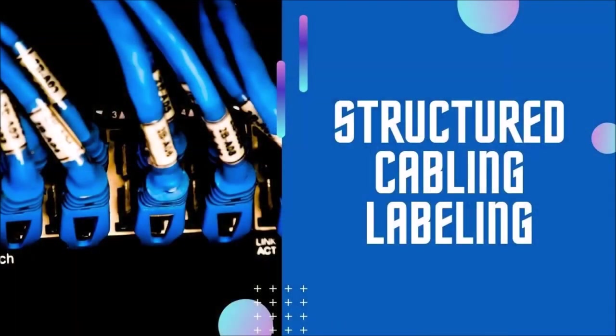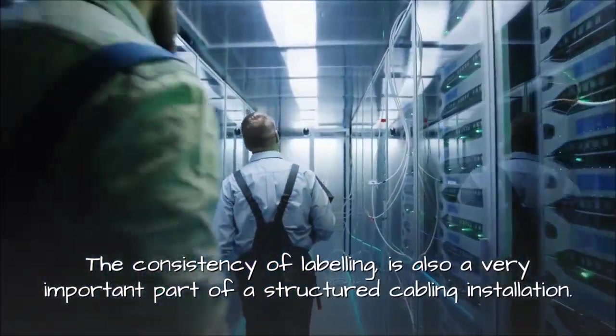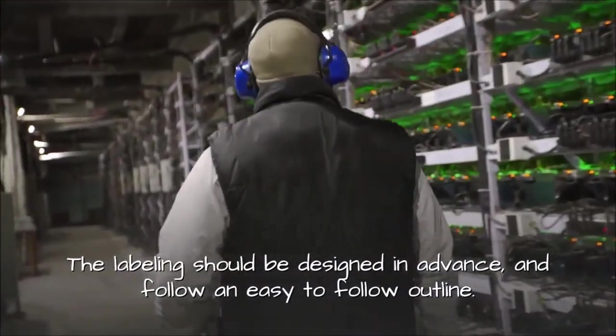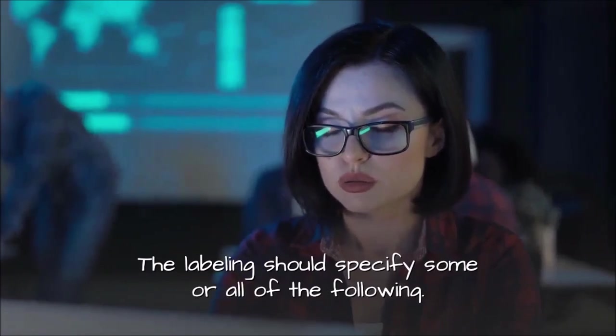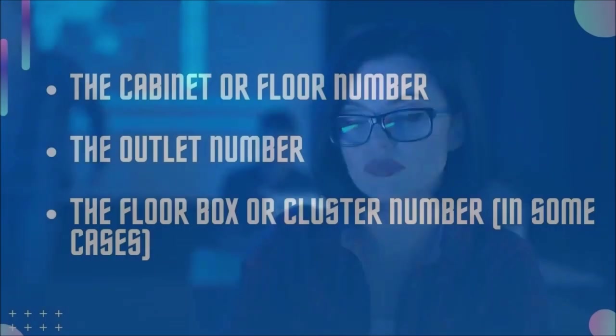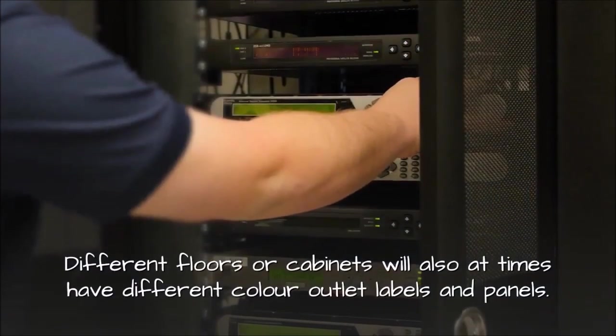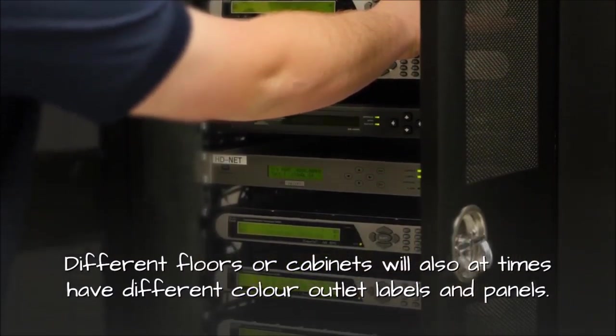Structured cabling labeling. The consistency of labeling is also a very important part of a structured cabling installation. The labeling should be designed in advance and follow an easy to follow outline. The labeling should specify some or all of the following: the cabinet or floor number, the outlet number, the floor box or cluster number in some cases. Different floors or cabinets will also at times have different color outlet labels and panels.